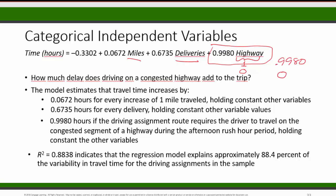We can also remember the interpretation of the regression coefficients in general. The regression coefficient here represents the increase in the y variable per unit increase in the x variable. And driving on a congested highway means the increase of 1 in the highway variable compared to not driving on a congested highway. So it makes sense that 0.9980 would be the increase in the number of hours due to the congested highway driving.